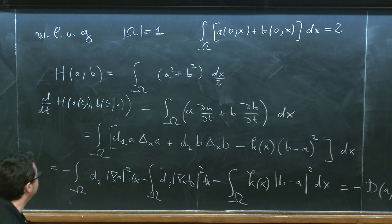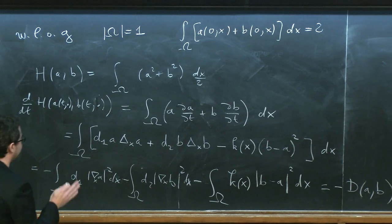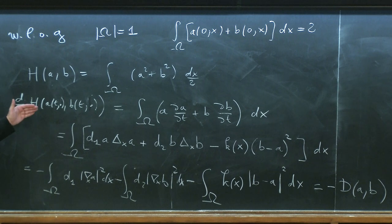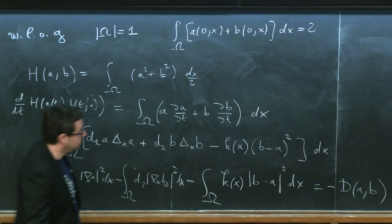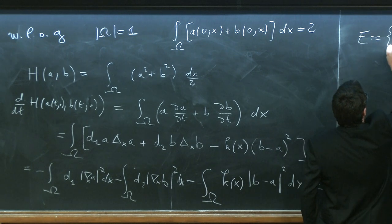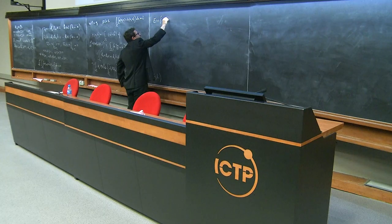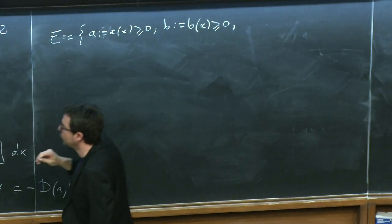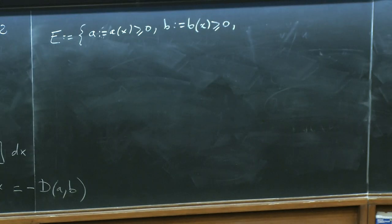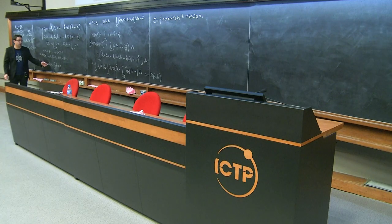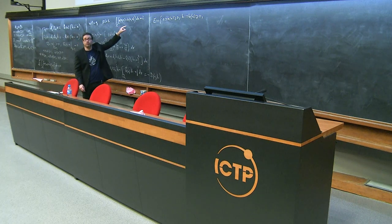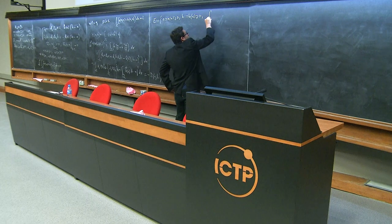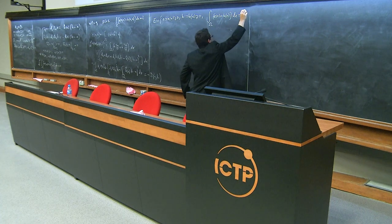To enter exactly the structure described yesterday, we impose the functional space E: functions a(x) non-negative, b(x) non-negative, and such that the integral of a(x) plus b(x) equals two — corresponding to the conservation of mass with the chosen initial datum.